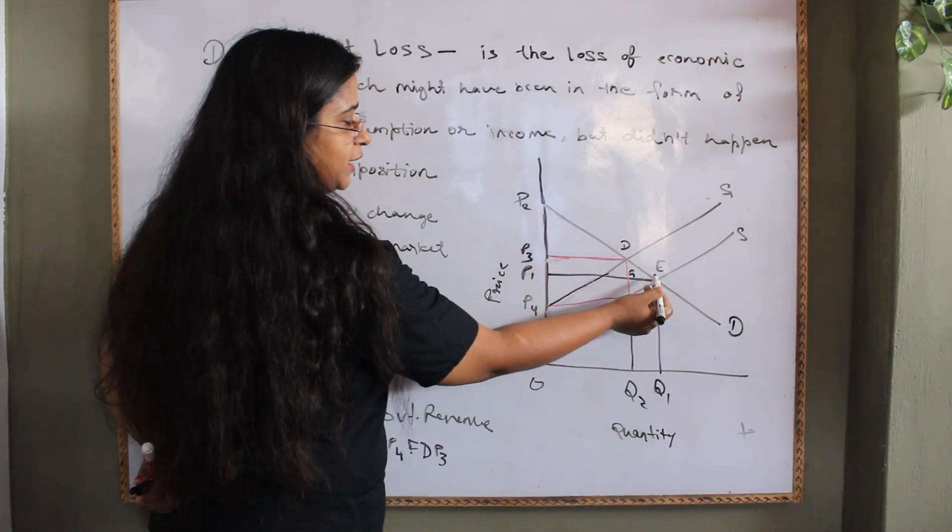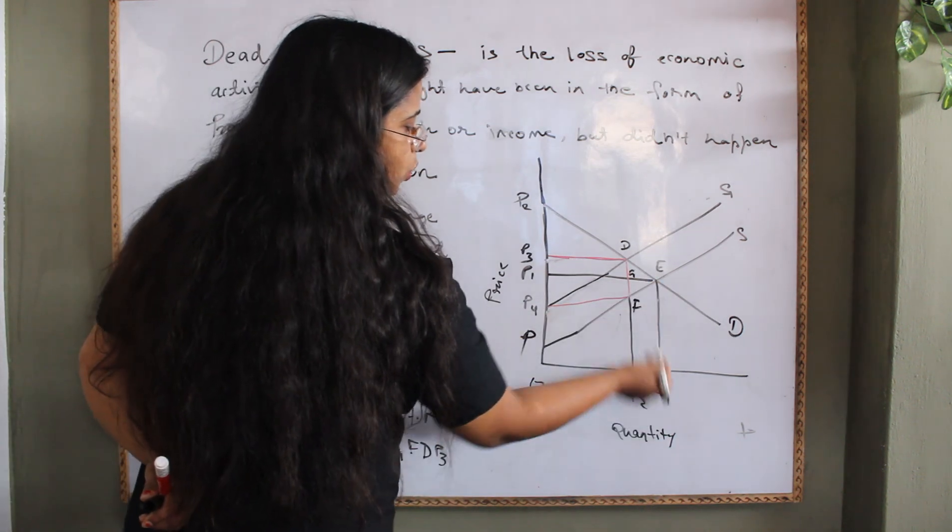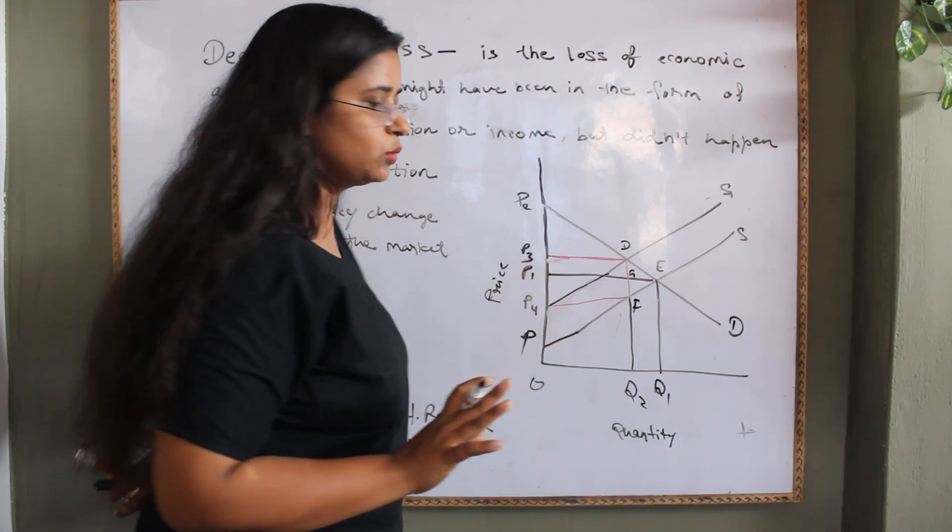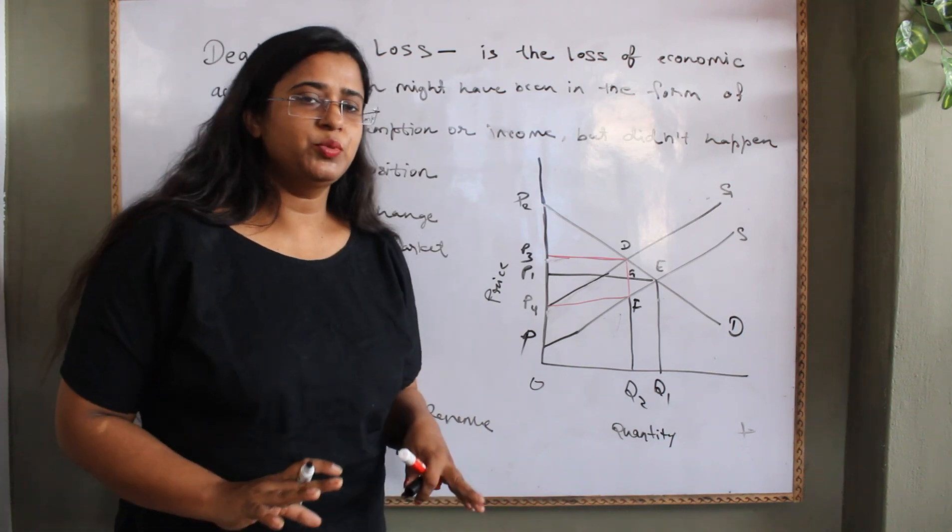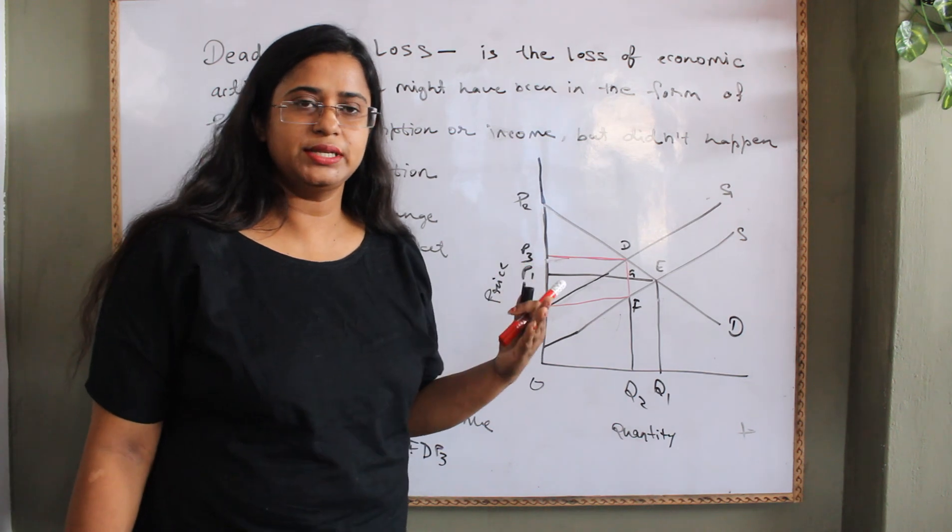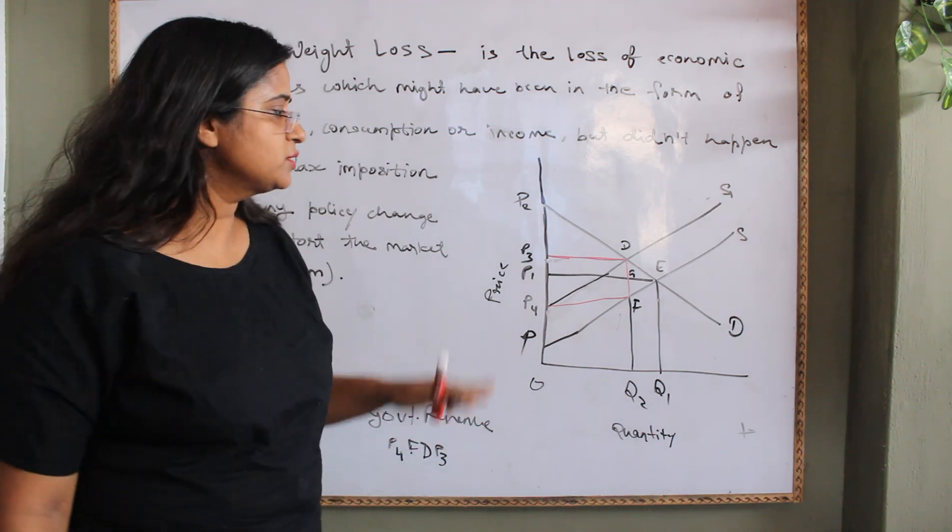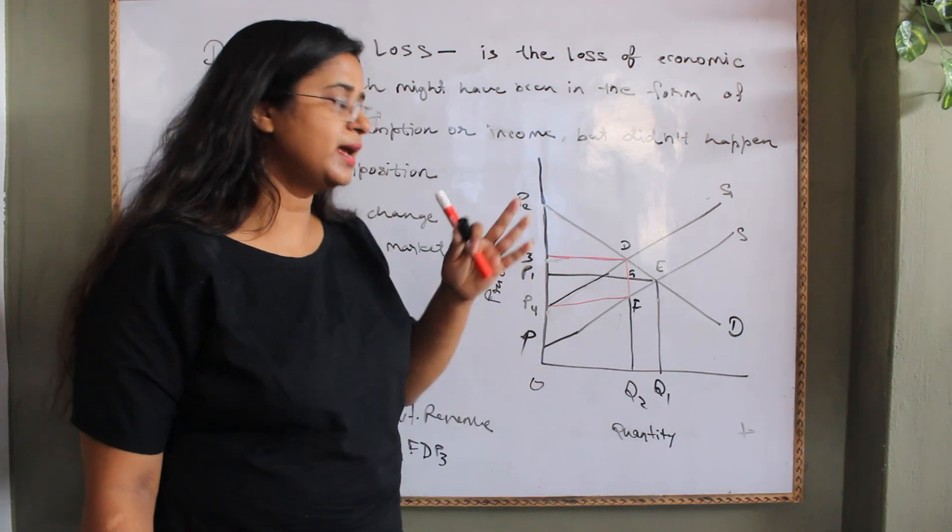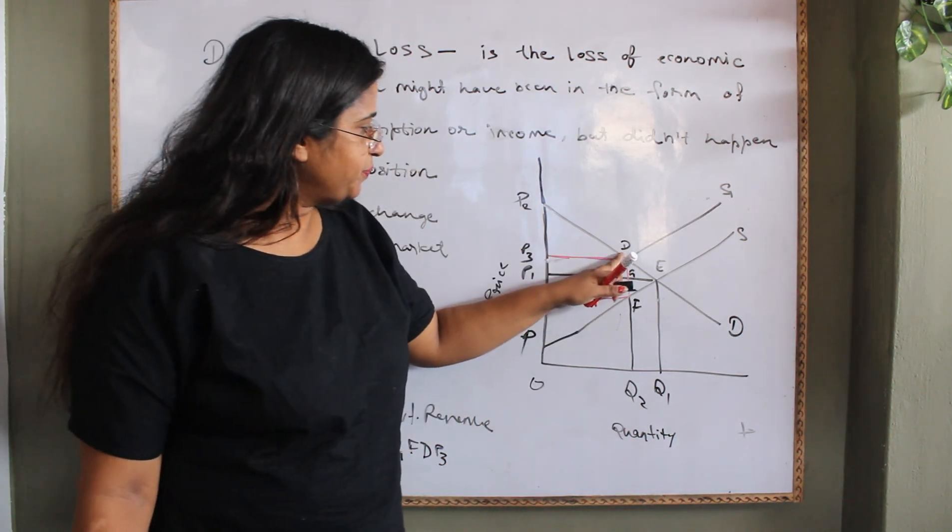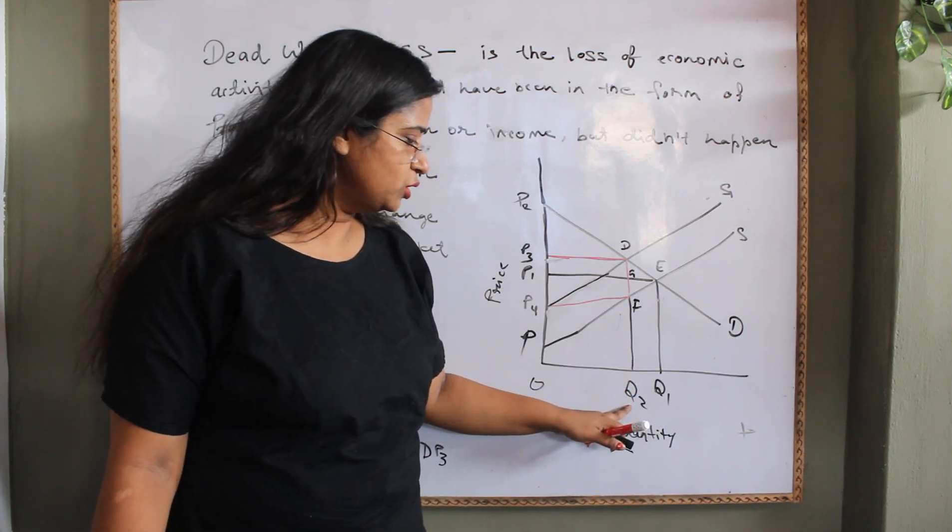Earlier, the equilibrium point was at E and Q1 quantity was produced at the P1 price. But after the tax imposition prices will be high. Obviously, you add up the tax price in the original commodity price. So, the price will be higher of the commodity and that's why the demand of that commodity will be reduced. The demand of that commodity has been reduced to Q2.